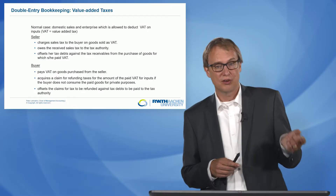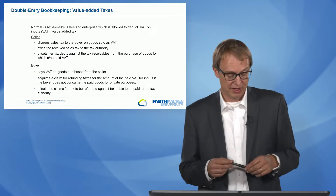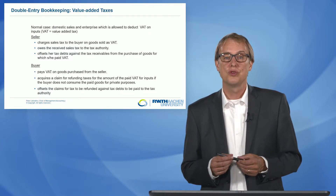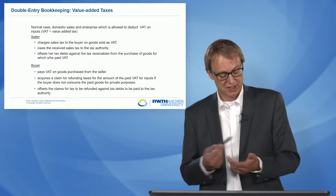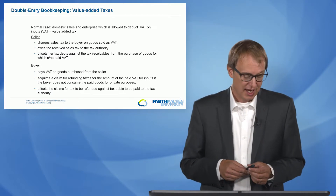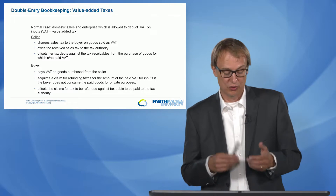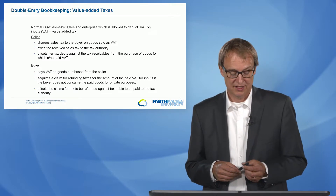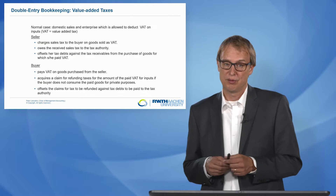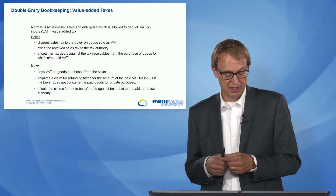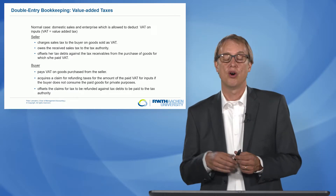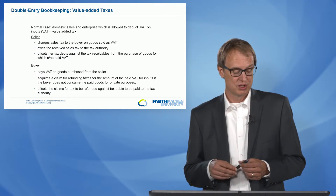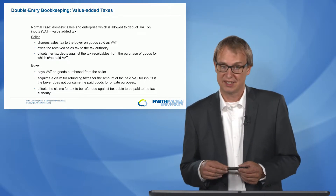Then the seller owes the value-added tax — the received sales tax — to the tax authority. And the seller offsets her or his tax debts against the tax receivables from products which the seller bought herself or himself, for which she or he paid value-added taxes.